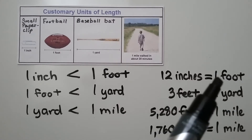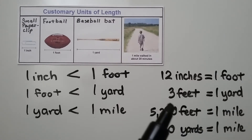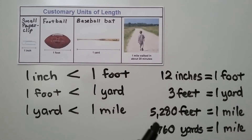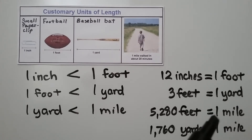Twelve inches is equal to one foot. Three feet is equal to one yard. Five thousand two hundred eighty feet is equal to one mile. And one thousand seven hundred sixty yards is equal to one mile.